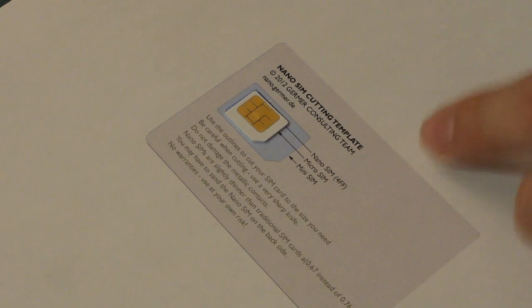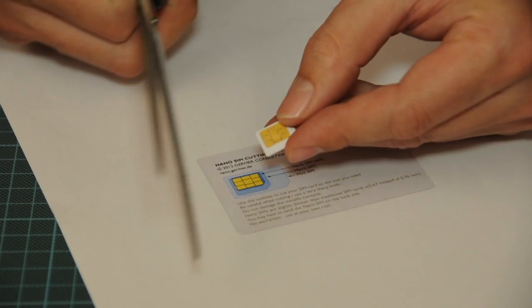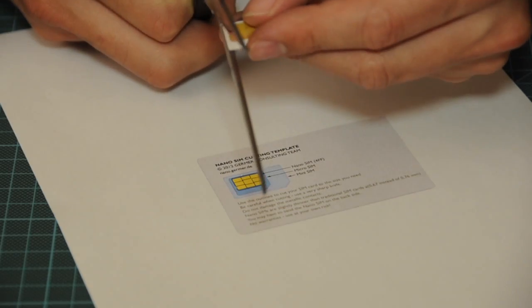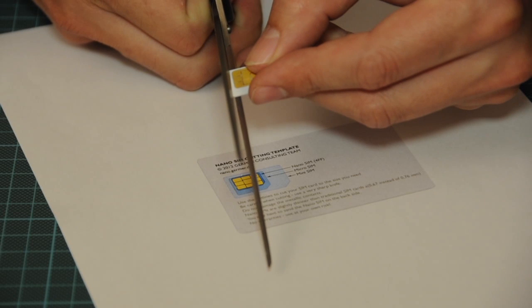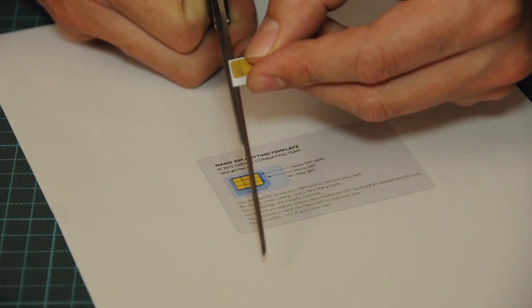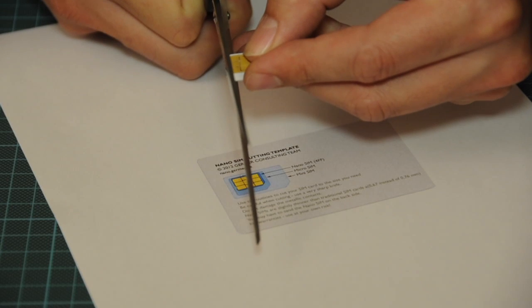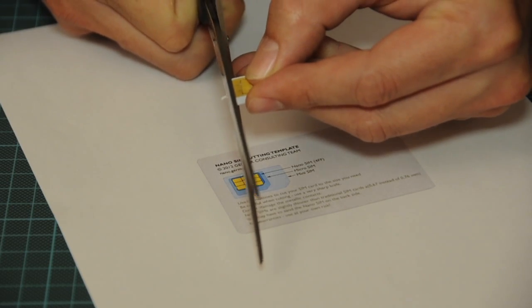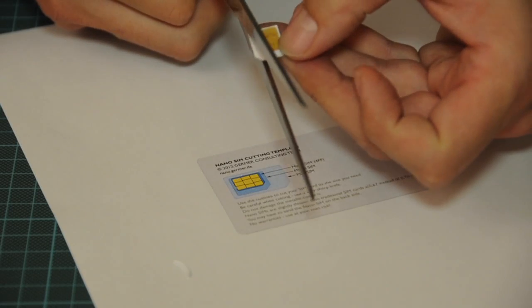So what I'm going to do now is I'm just using a pair of sharp scissors. That's doing the job nice and easy. And I will try not to damage the contacts here. So what I'm doing is I'm cutting away just the plastic.